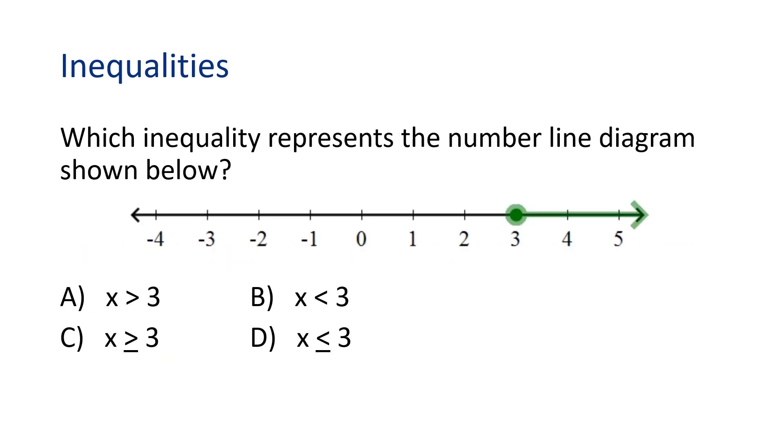Let's try this problem. Which inequality represents the number line diagram shown below? We are given a number line from negative four to five. The line is shaded to the right of three, where the numbers become larger or greater than three. Because a solid dot is on the number three, the inequality will have an equals to with it. So the shaded number line represents all numbers greater than or equal to three. Option C is the correct answer. X is greater than or equal to three.